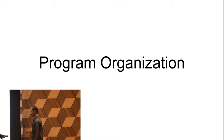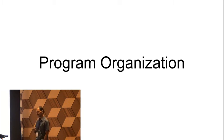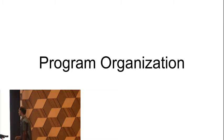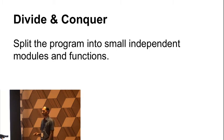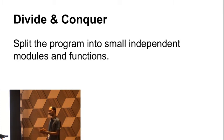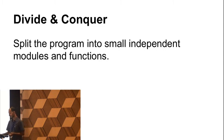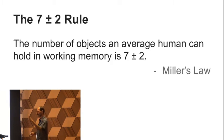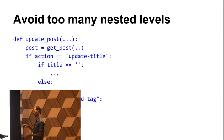Now let us look at program organization. Picking the right names is the low-hanging fruit — it does not take a lot of effort but it makes code a lot more readable. But there are other things that are also important. One of them is how you organize your programs. The important thing is you have to divide the program into smaller parts that can be understood independently — split the program into smaller independent modules and functions. Break into smaller functions so that each function can be understood independently. Also avoid duplication — don't repeat the same code again and again; try to generalize it and write a function to reuse.